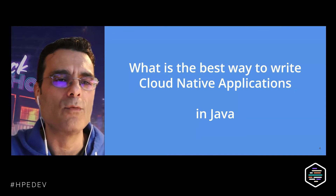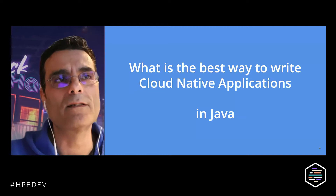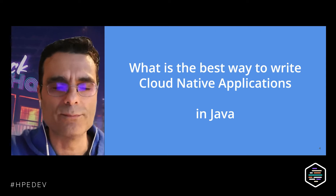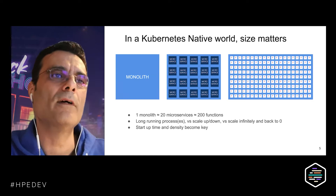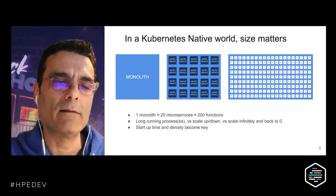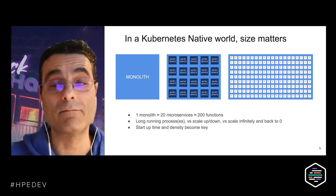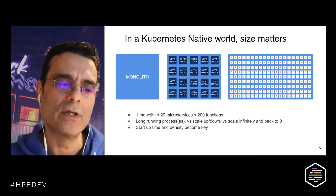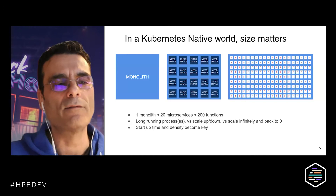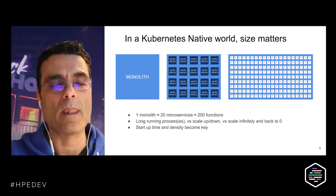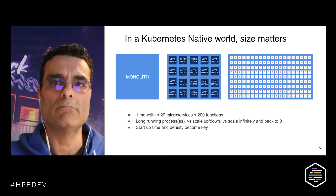The problem was: what is the best way to write cloud native applications in Java? Java is the second most popular language out there, especially for enterprise applications. But Java is challenged in this new cloud native environment. We had lots of knowledge creating monolith applications running on application servers with lots of memory. As you break the problem into smaller microservices or functions, size matters and density matters — you end up paying for memory and CPU, wanting to fit as many instances as possible.